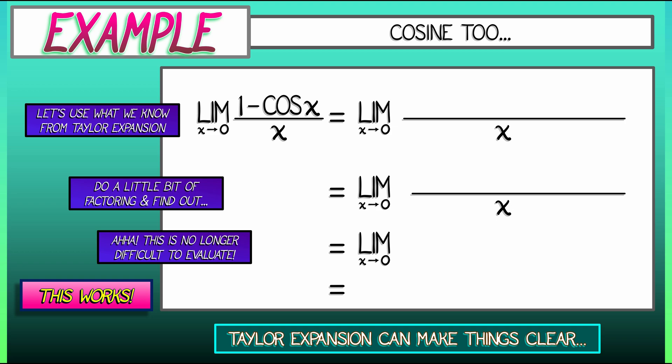In the numerator of this limit, we have 1 minus the series for cosine. That's 1 minus x squared over 2 factorial plus x to the fourth over 4 factorial. What do we see?